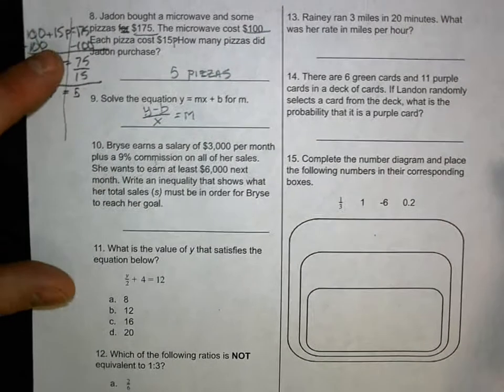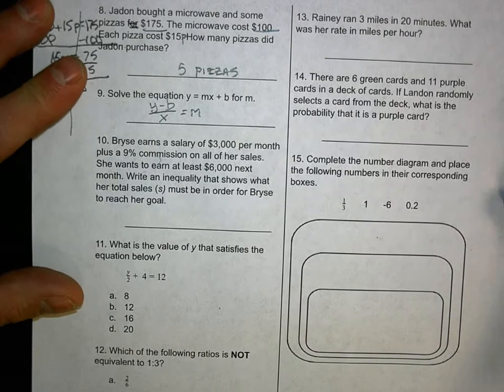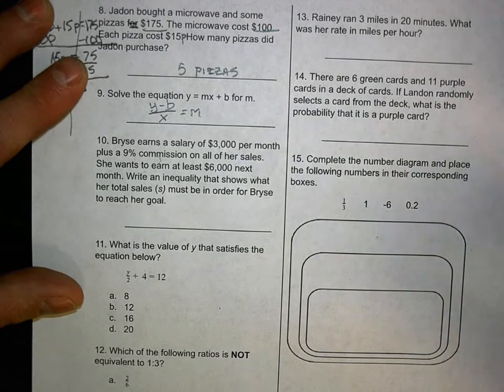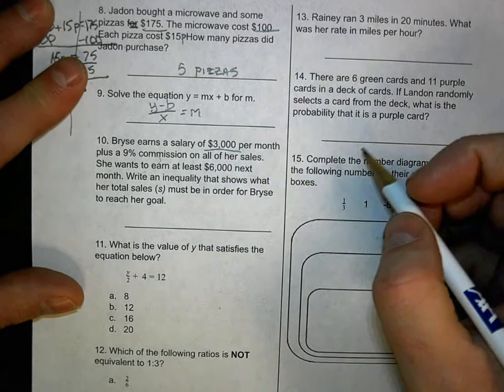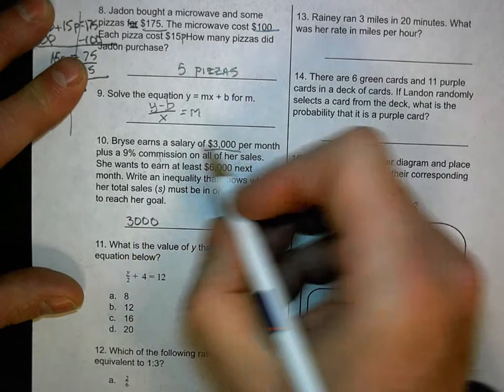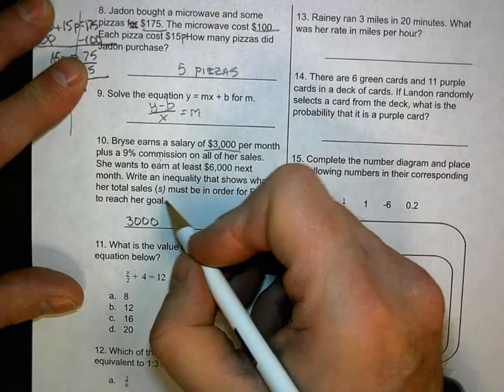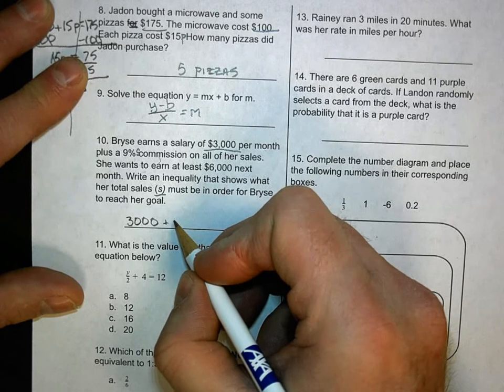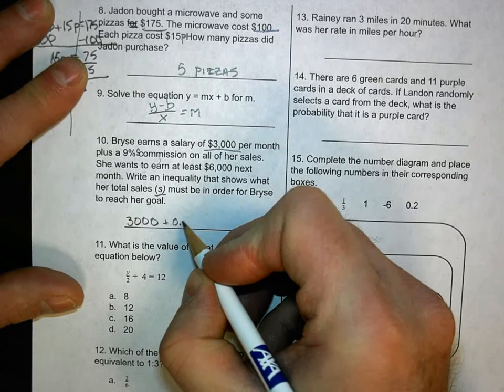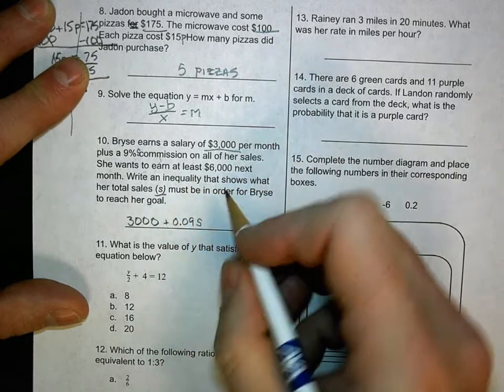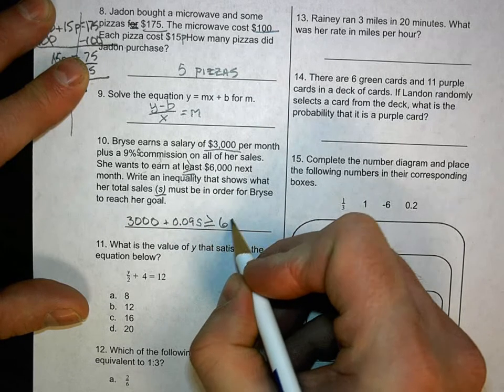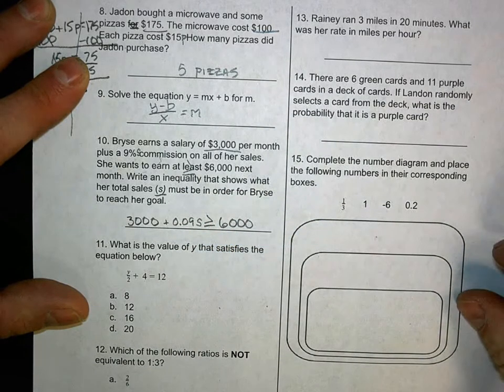All right, let's talk about Bryce's earnings. Bryce earns a salary of $3,000 per month plus a 9% commission on all her sales. She wants to earn at least $6,000 next month. Write an inequality that shows her total sales. And it must be in order for Bryce to reach her goal. Okay, so we're dealing with inequality. $3,000 is her base amount. So that's her starting amount, $3,000. Plus she earns a 9% commission on sales. So we'll call that sales, which they're saying here it's S. Now 9% is .09. So 0.09 times sales. And that has to be at least. So it has to be greater than or equal to $6,000. Yep, the bell went off. People are going to come in and see me doing this. Isn't that special?